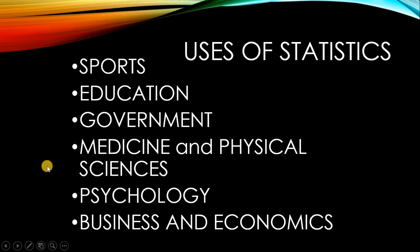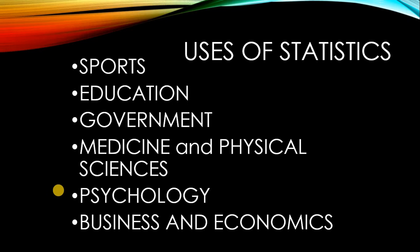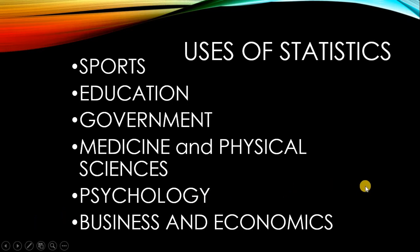For medicine and physical sciences, normally inferential statistics is used. For example, the vaccine for COVID-19 undergoes a lot of clinical trials to determine how efficient it is — whether it's 90% effective, 99% effective, and so on. If there's already an interpretation or conclusion about data taken from samples, that is inferential statistics. For psychology, psychologists apply statistics to observe individuals or groups of people, making use of both descriptive and inferential statistics. For business and economics, you need both descriptive and inferential statistics to come up with proper decision-making.